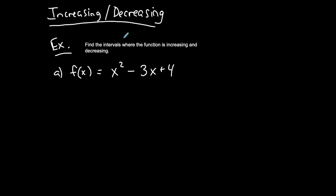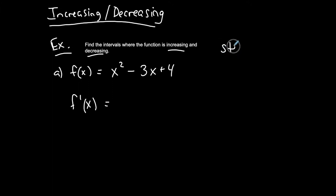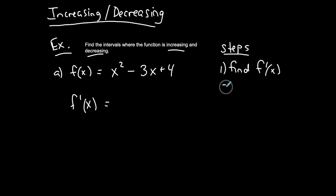Increasing and decreasing is a rate of change, and a first derivative is a rate of change. So you're always going to find the first derivative first. Step one: find f prime of x — find the first derivative. In this case, my first derivative is 2x minus 3.